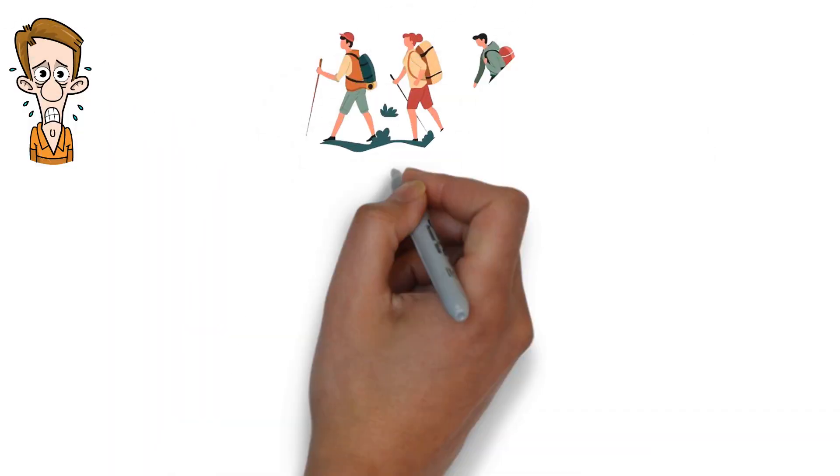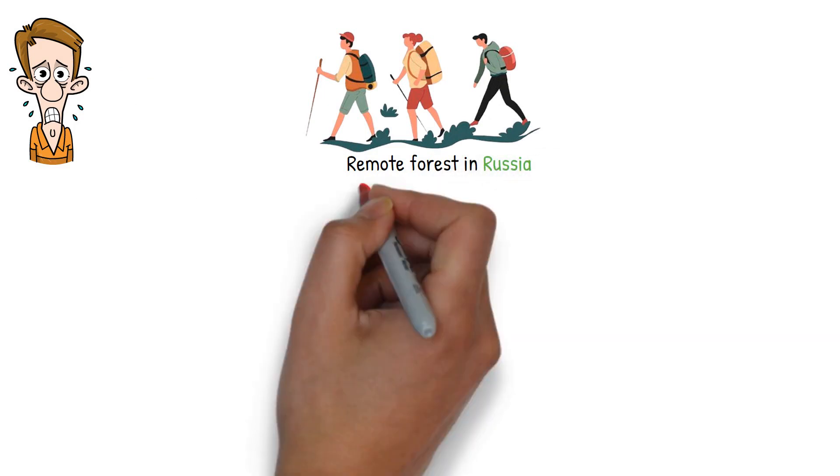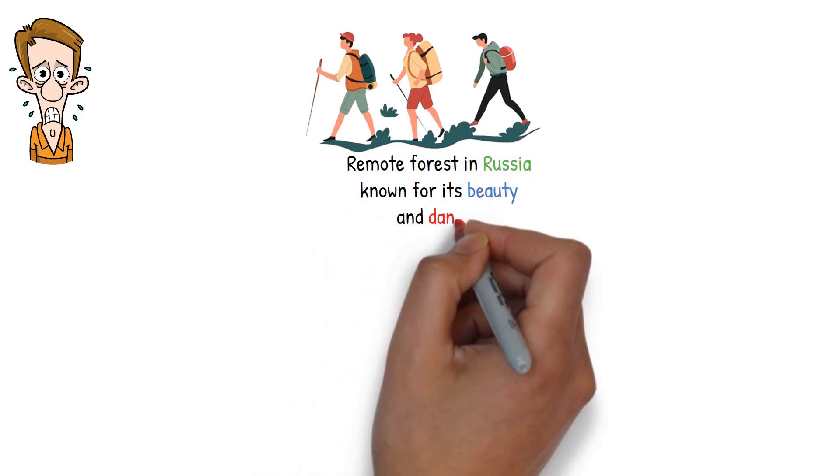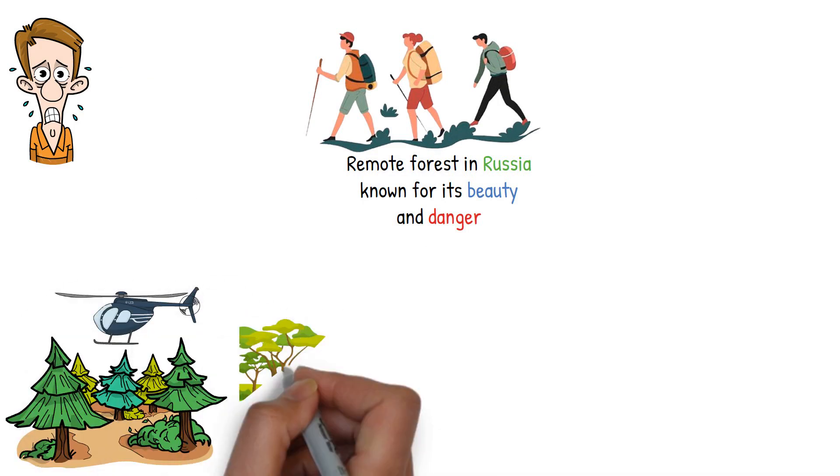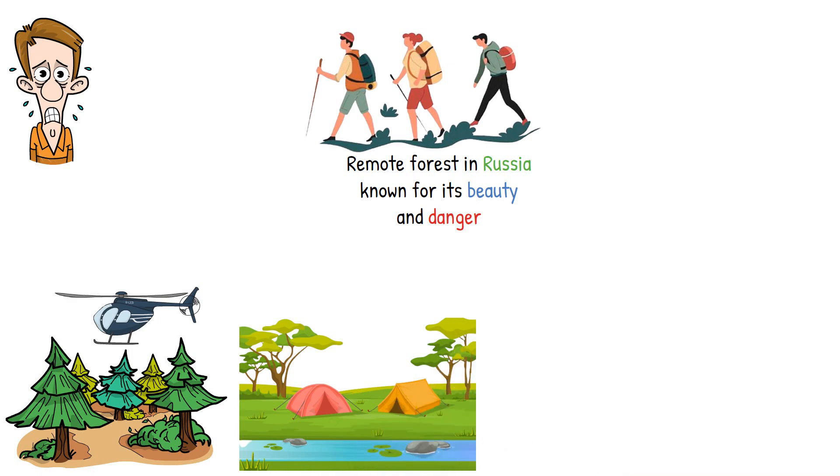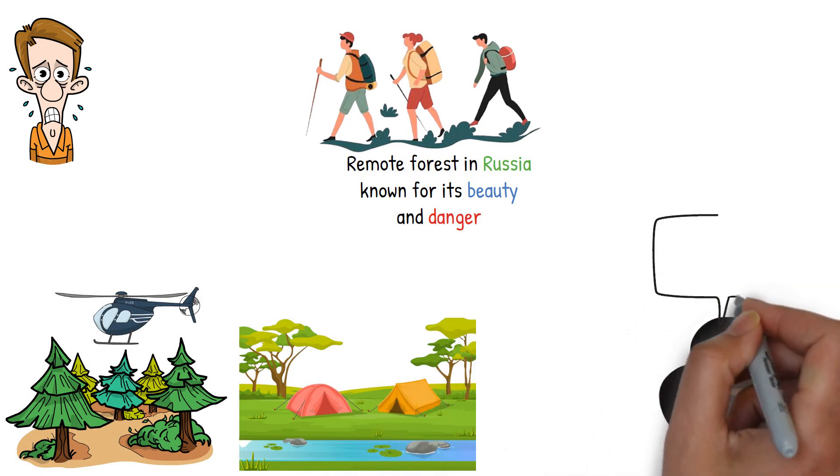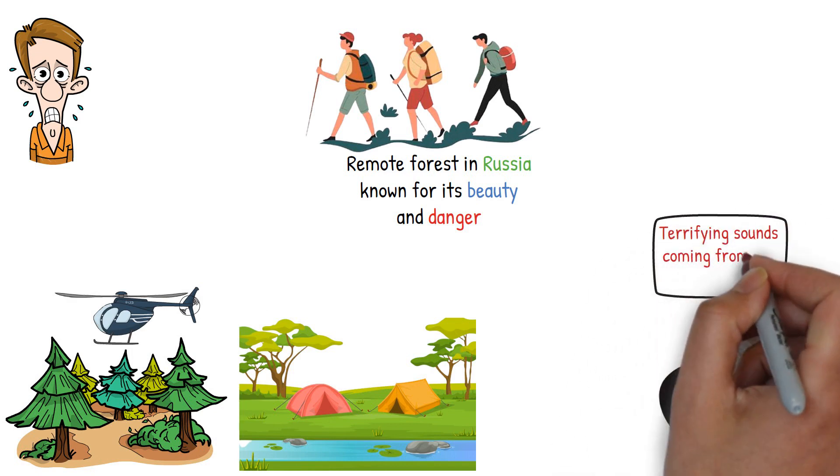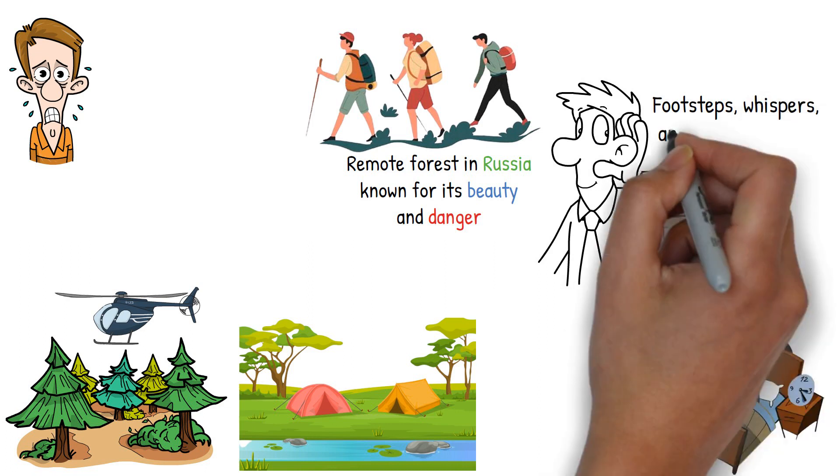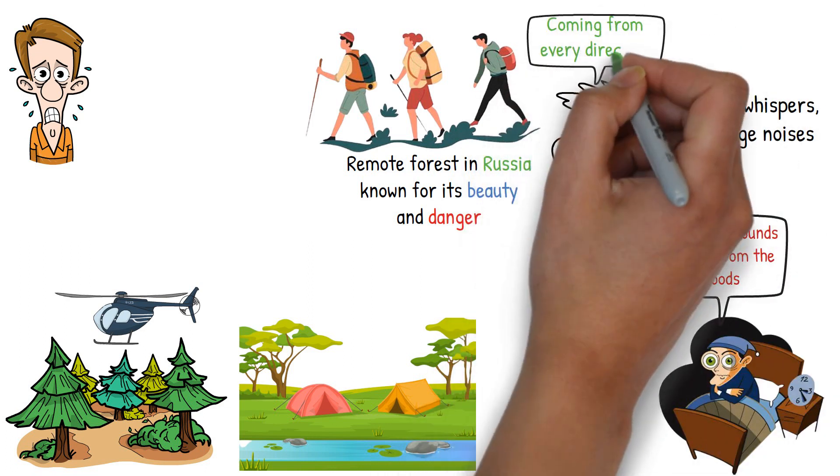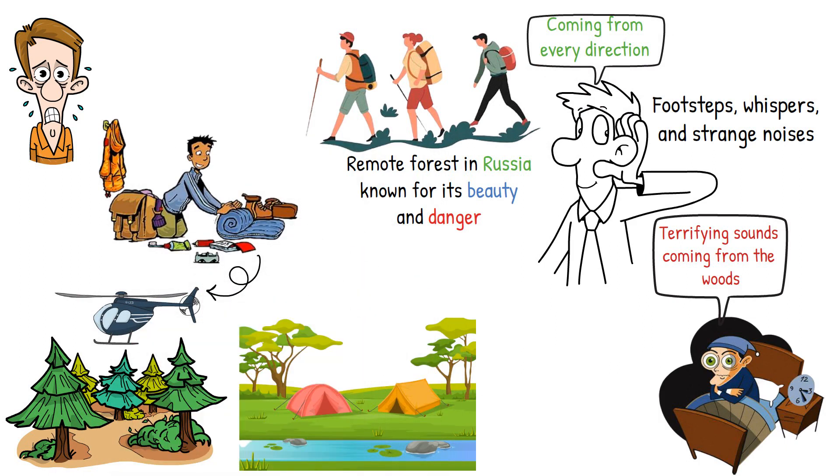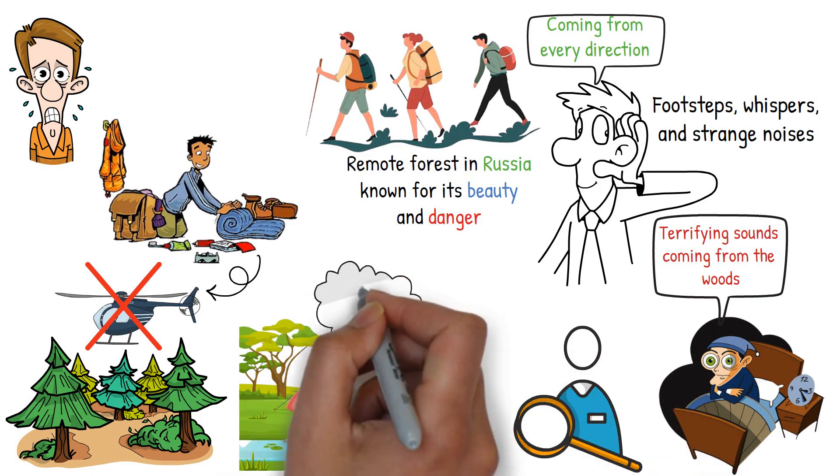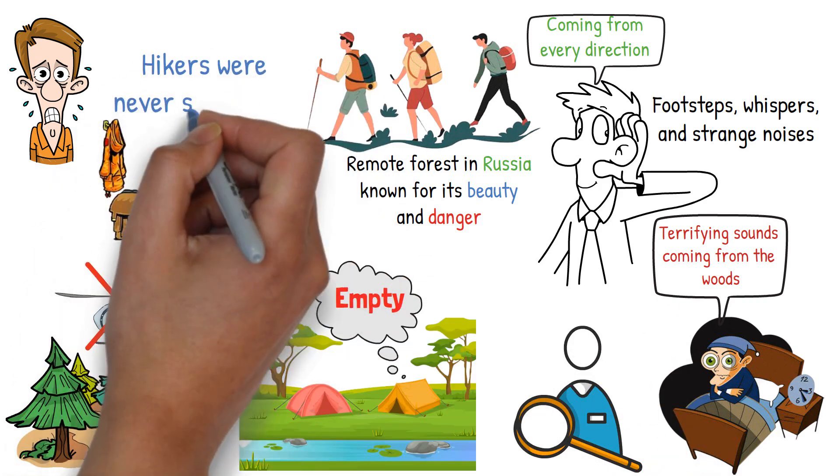Act 3. Our final story is perhaps the most terrifying. A group of experienced hikers decided to explore a remote forest in Russia known for its beauty and danger. The area was so isolated that it was only accessible by helicopter. The hikers set up their tents near a small lake and started exploring. But one night, they were awoken by terrifying sounds coming from the woods. They could hear footsteps, whispers, and strange noises that seemed to be coming from every direction. They decided to pack up and leave, but when they tried to find the way back to the helicopter, they got lost. The search team found their empty tents, but the hikers were never seen again.